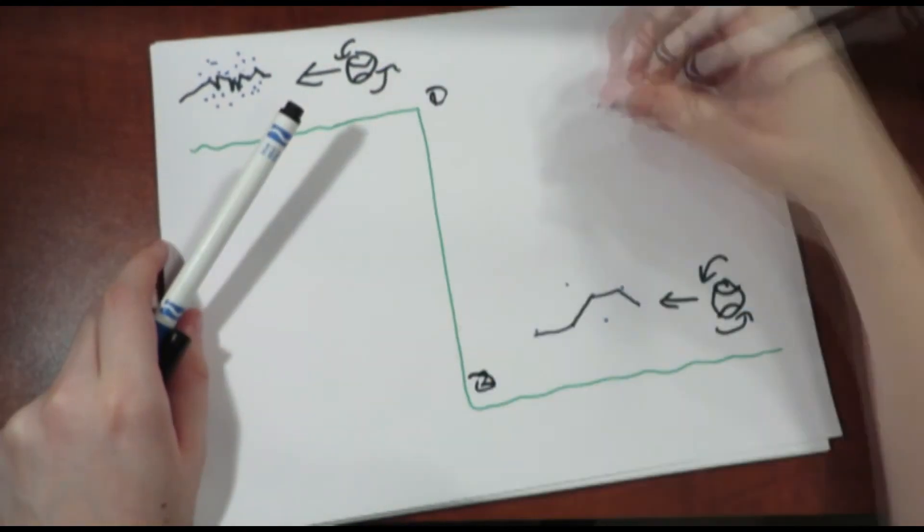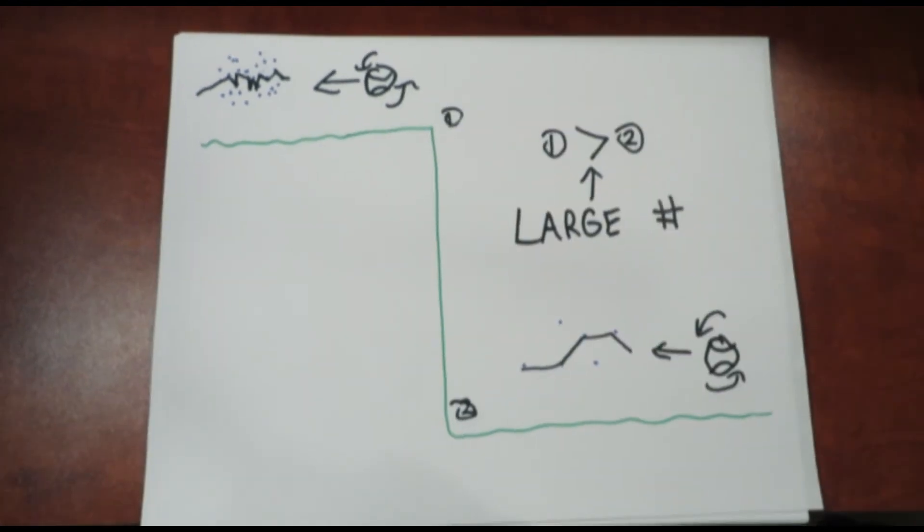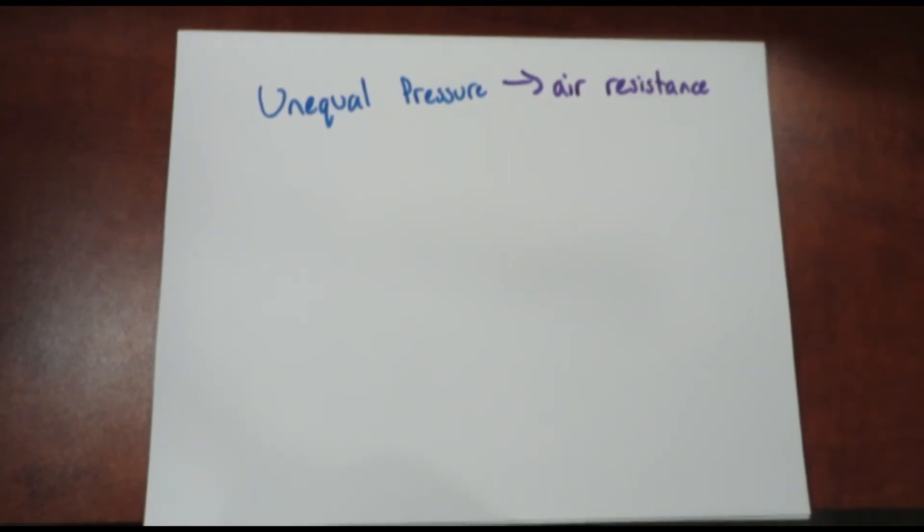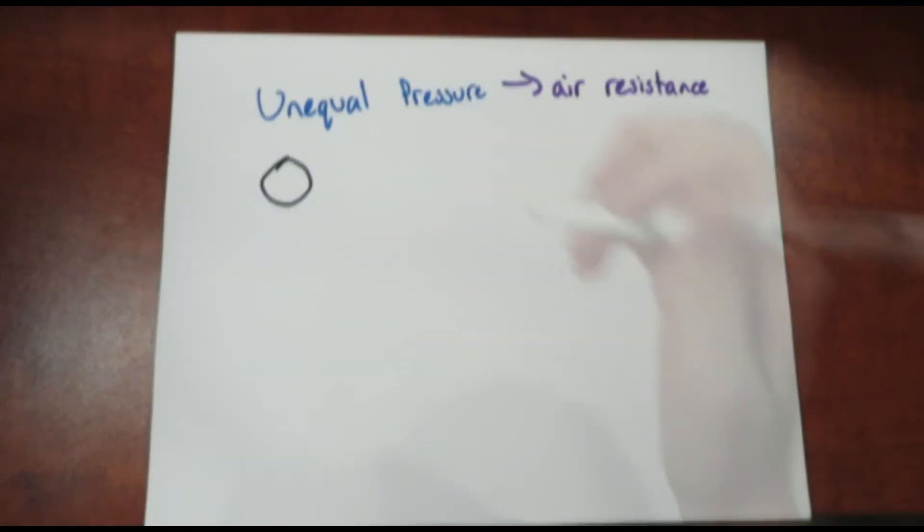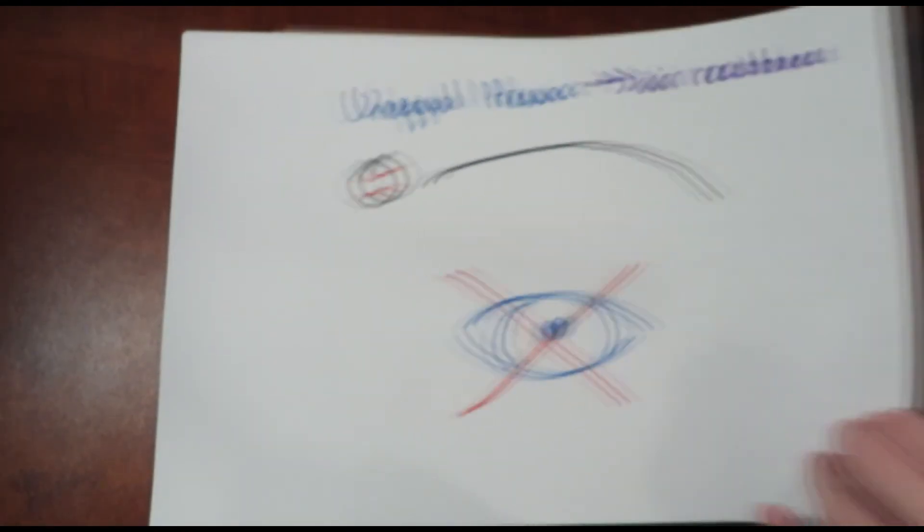Of course, in order for the ball to curve significantly different, the elevation of the two different places must be very different as well. So, to sum it up, unequal pressure on both sides of the ball caused by air resistance is the reason for a curveball's curve and is not a mere trick of the eye.